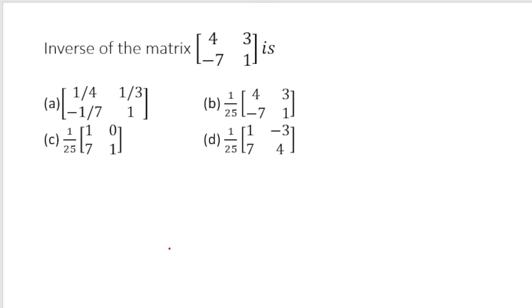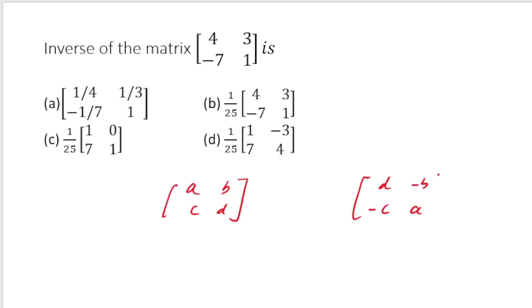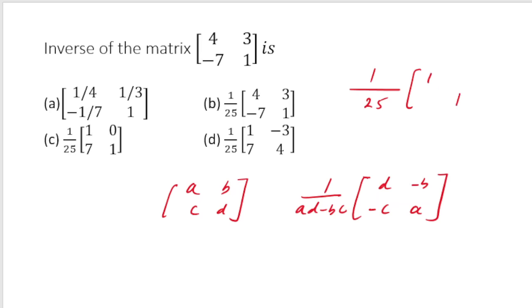Find the inverse of the 2×2 matrix A = [[a,b],[c,d]]. For a 2×2 matrix, the inverse is (1/det)·[[d,−b],[−c,a]]. Here det = 4+21=25, we swap diagonal elements and negate off-diagonal elements, then divide by 25: A⁻¹ = (1/25)·[[4,−3],[7,1]]. Wait — rechecking: the elements give [1,−3;7,4] divided by 25. The matching option is [1,−3;7,4]/25.